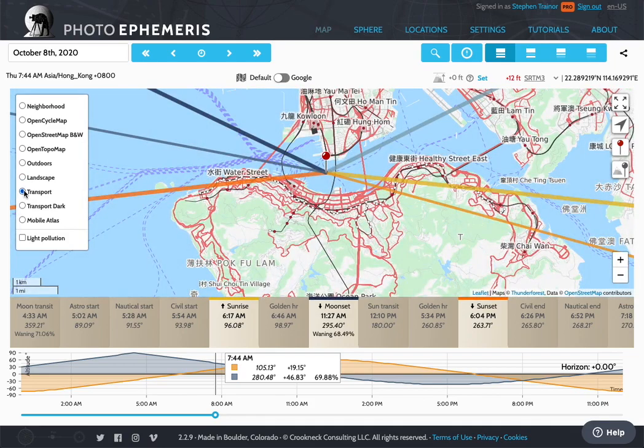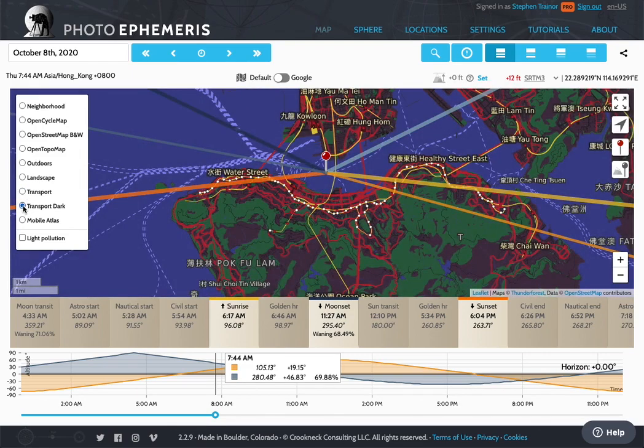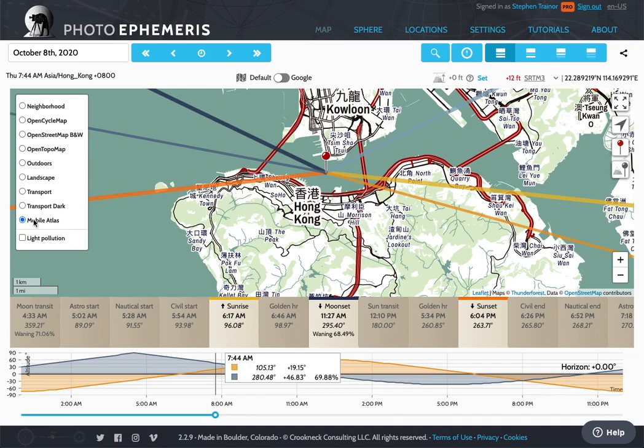Transport as you'd expect focuses on the transportation links of which there are many and varied sorts in Hong Kong. Transport Dark shows you that on a darker map style. Good if you like night mode I guess. Mobile Atlas gives you a nice high contrast view of the map. So those are the additional styles you get by default.